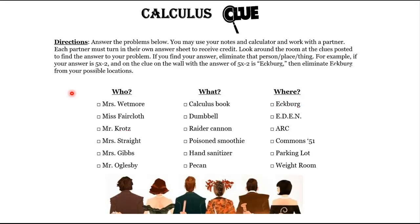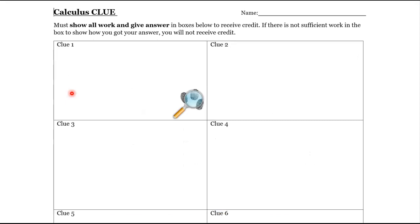If you look around the room at the clues that are posted, you're going to find the answer to your problem. When you find that answer, eliminate that person, place, or thing. For instance, if you got an answer of 5x minus 2, and the clue on the wall with that answer says ECBURG, then it didn't happen in the ECBURG — eliminate that from your possible locations. You should end up with one person, one place, and one item left, and that will be your solution to turn in. You must show all work and give answers in the boxes to receive credit — if there's no work backing up your answer, you won't get credit.